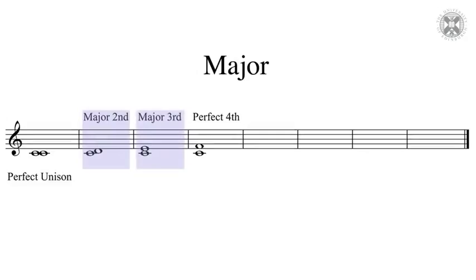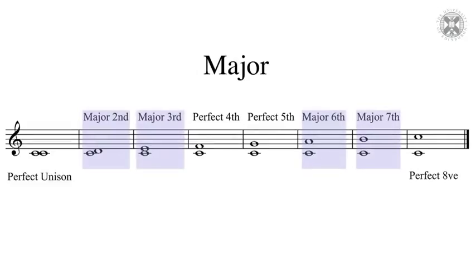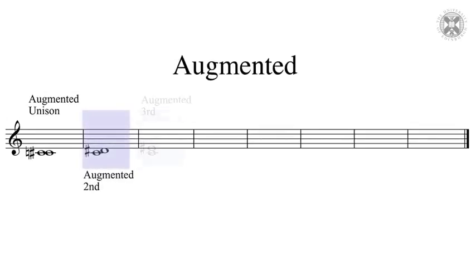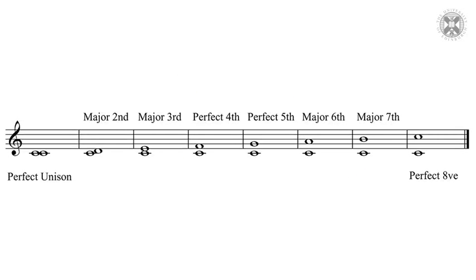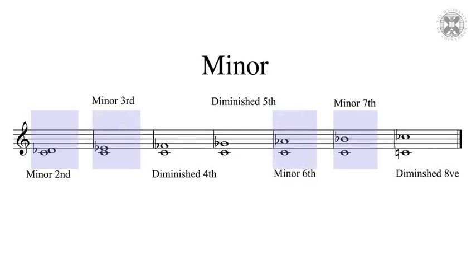Music theory convention gives us even more options when starting from a major interval. The second, third, sixth, and seventh all start as major from our reference point. For any of those, if you add one semitone — sharpen the top note — you get an augmented interval. From that same major, if you flatten the top note by one semitone, you get minor. Now Zach, what would happen if you took that minor interval and flattened it by one semitone again? Well, you're making it smaller, so that interval has been diminished.